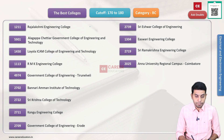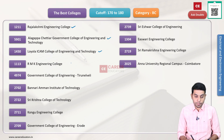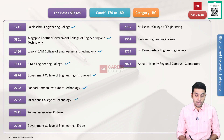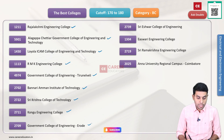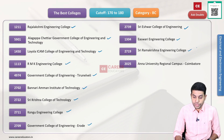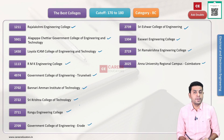Next category — we have BC category. College codes: 1211 Rajalakshmi Engineering College, 5901 Alagappa Chettiar Government College of Engineering and Technology, 1450 Loyola ICAM College of Engineering and Technology, 1113 RMK Engineering College, 4974 Government College of Engineering Tirunelveli, 2702 Bannari Amman Institute of Technology, 2722 Shree Krishna College of Technology, 2711 Kongu Engineering College, 2709 Government College of Engineering Erode, 2739 Shree Eshwar College of Engineering, 1304 Ishwari Engineering College, 2719 Shree Ramakrishna Engineering College, 2025 Anna University Regional Campus Coimbatore. These are the colleges for BC category with a cut-off in the 170-180 range.